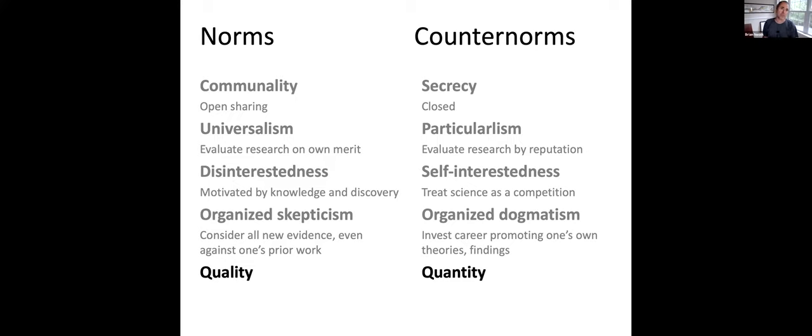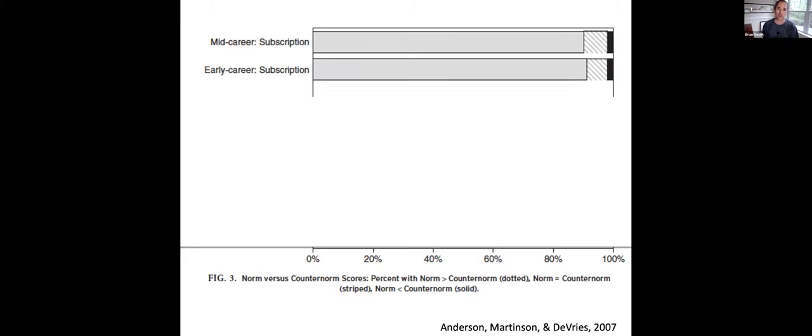So we might recognize those as norms in the general sense of how science is characterized. But do researchers actually endorse those norms? Do they believe that's how science should operate? Anderson and her colleagues did a survey of about 3,300 NIH awardees. What you're seeing here is a cumulative plot of their responses to endorsing the norm or the counter norm. In gray are those that on average endorse the norms over the counter norms, and you can see 90% of the sample is saying, yeah, I agree with Merton's norms of science.